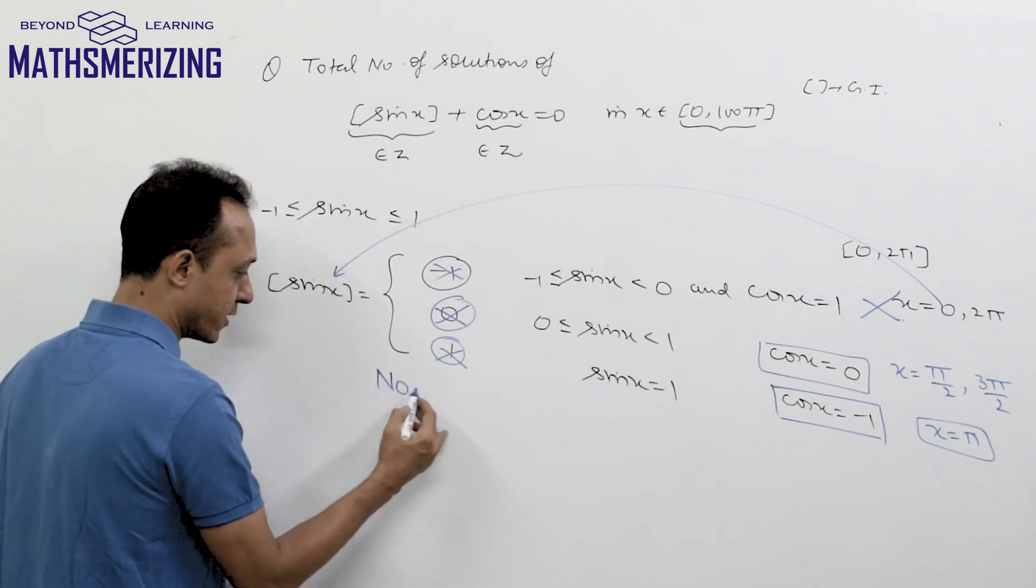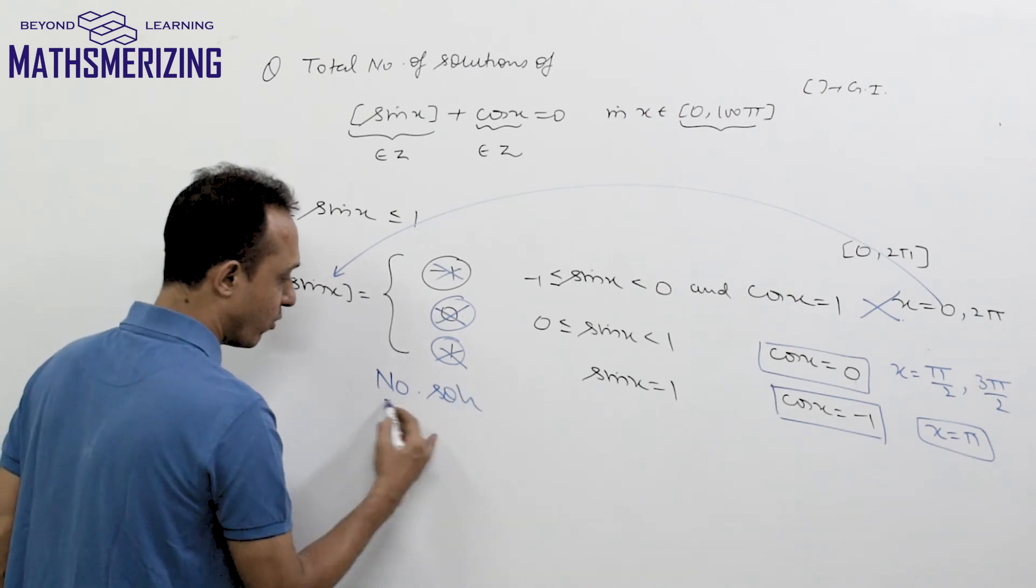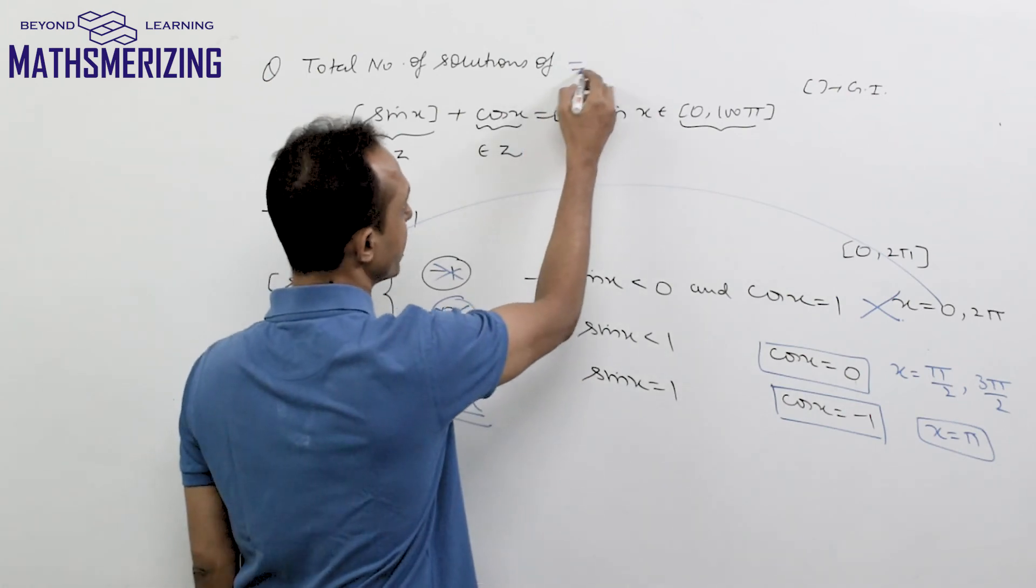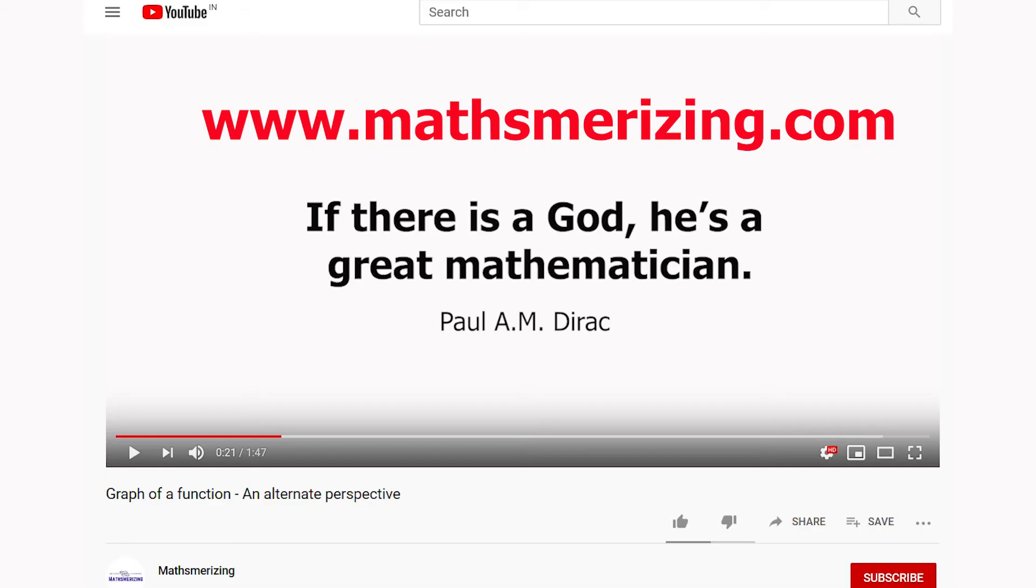In each of the three cases, I am not getting any solution. So the answer to this question is no solution. The total number of solutions in this interval is simply 0.